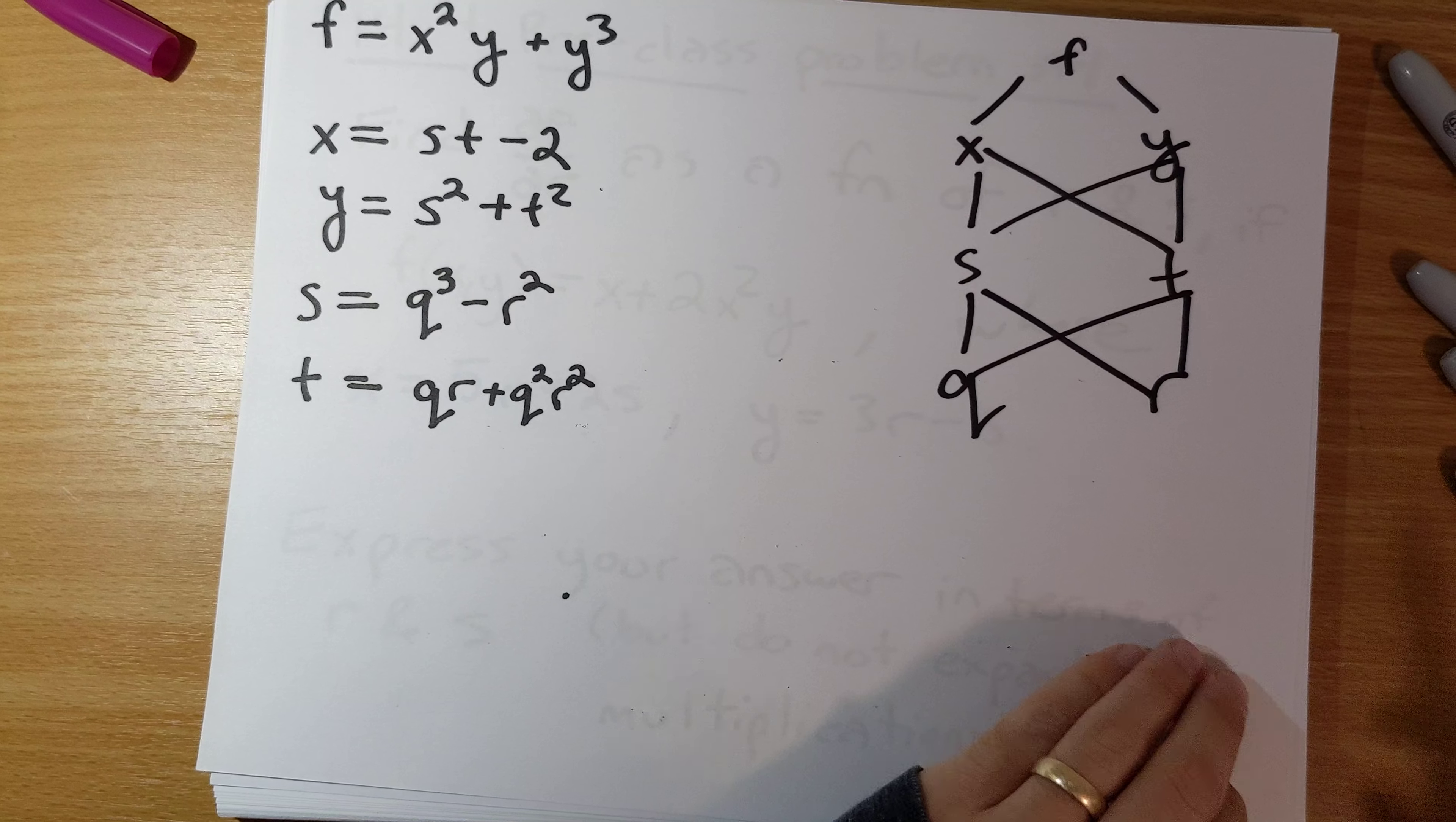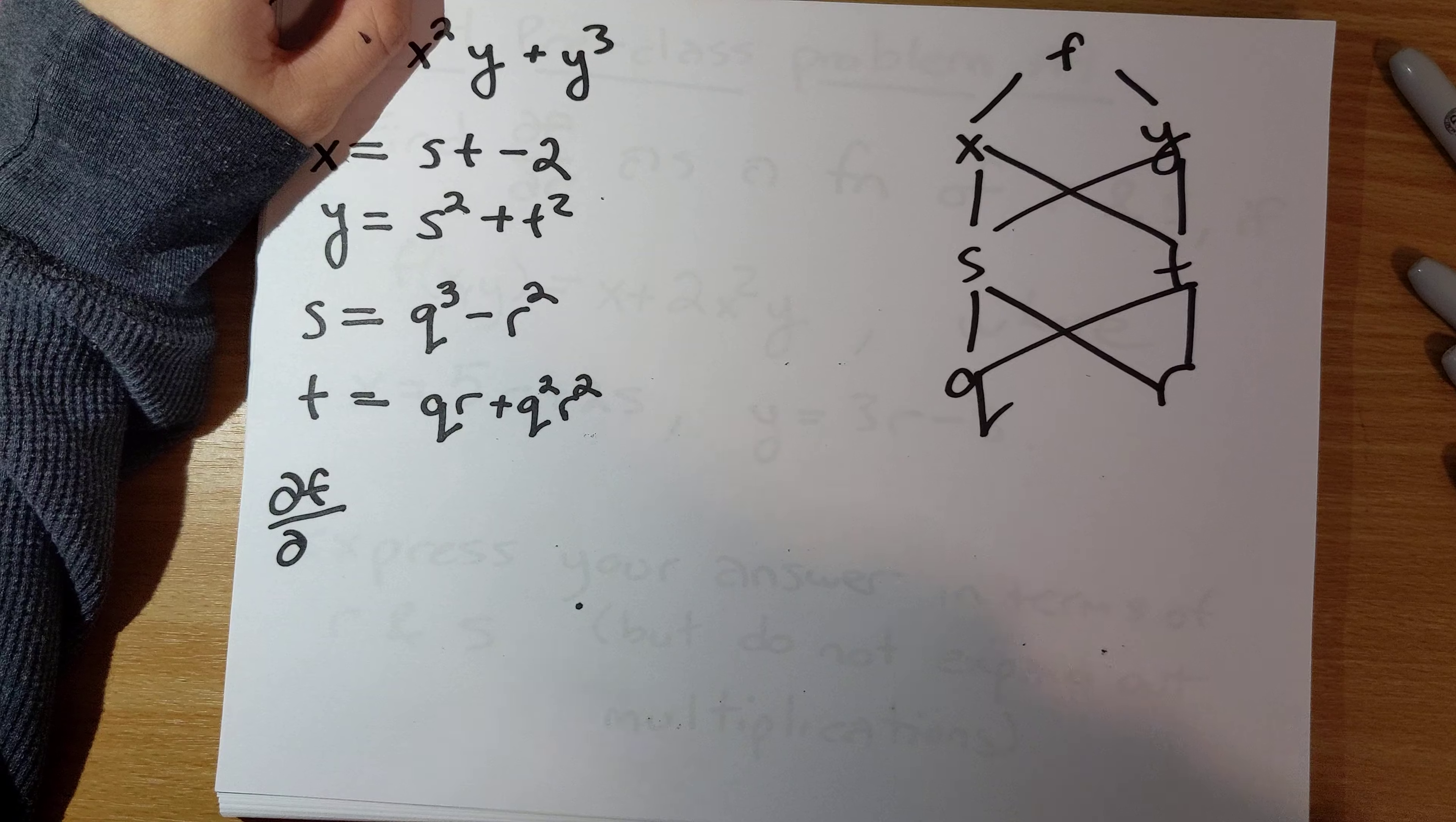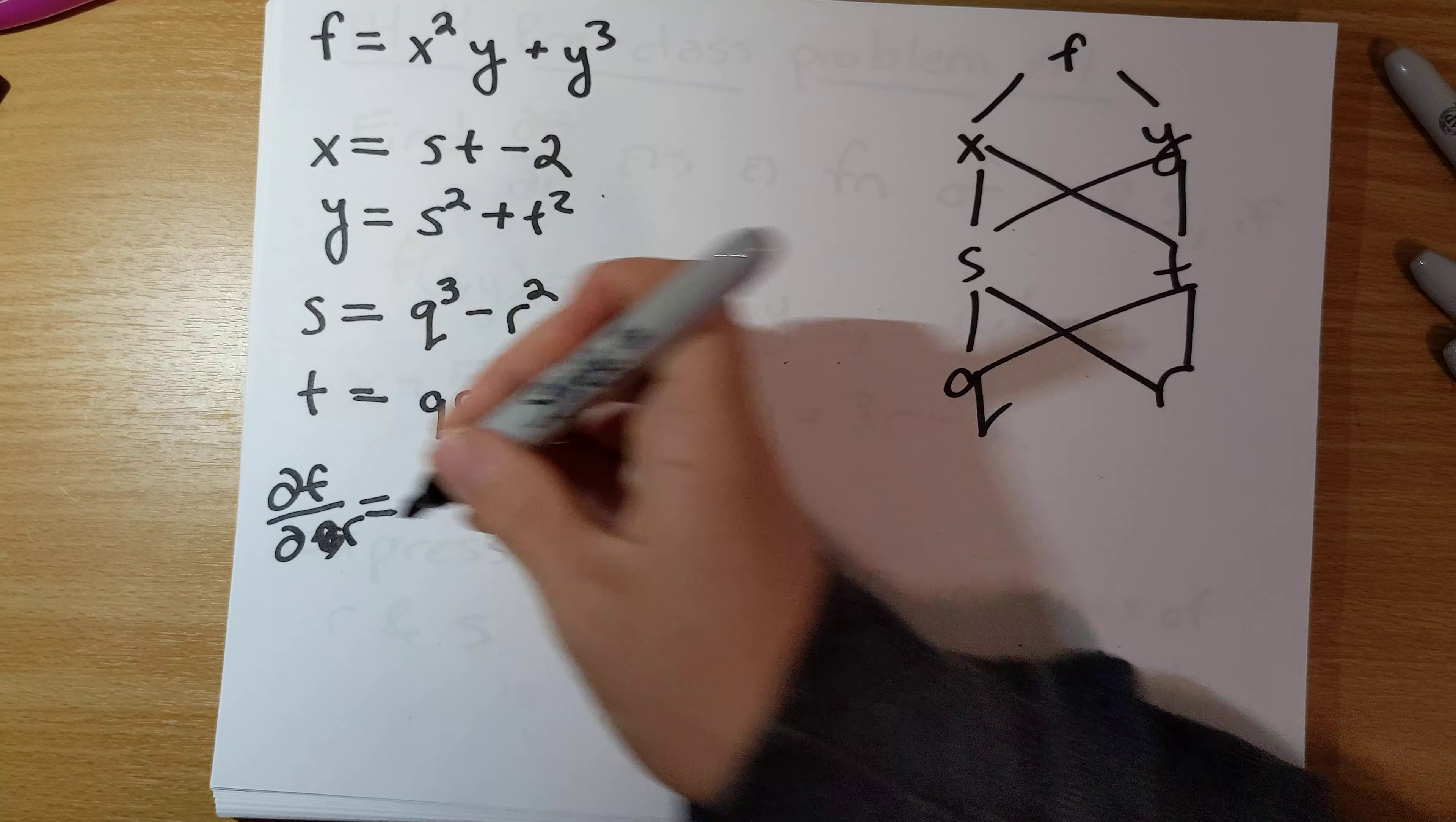And so what this process allows us to do is to say, well, what's the partial derivative of f with respect to, let's say s here. We're just going to say how many different paths— oh sorry I shouldn't go s that's an intermediate variable, let me go with r here, one of the independent variables here.